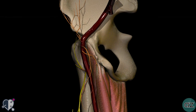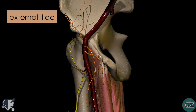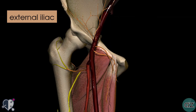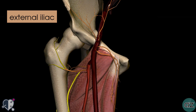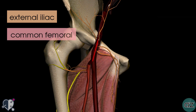Looking at this model here, we can see the external iliac artery, and what happens is that it passes under the inguinal ligament to become the common femoral artery.